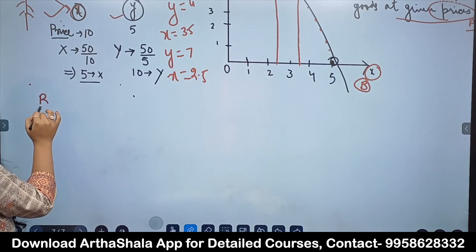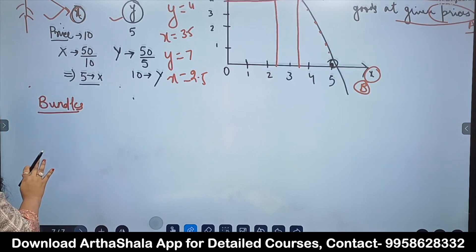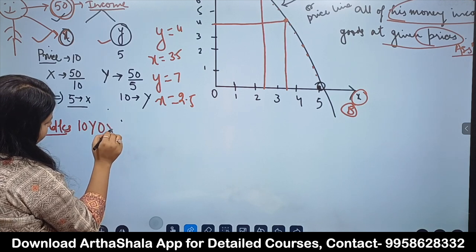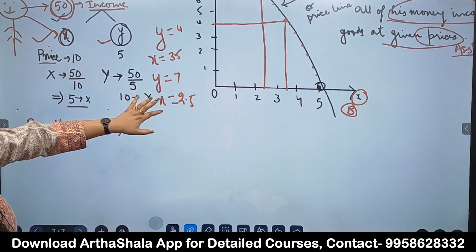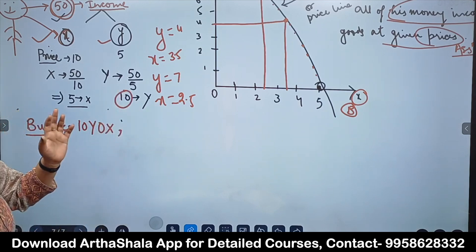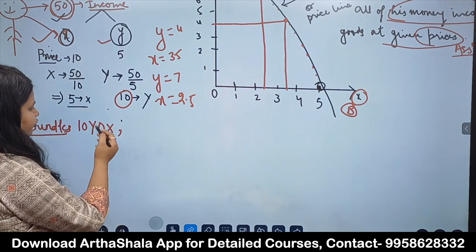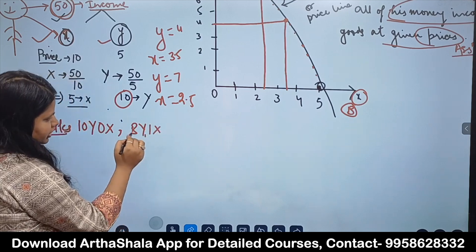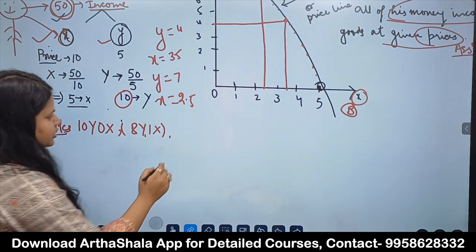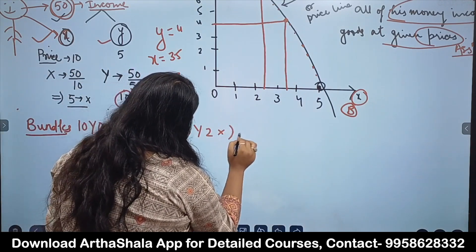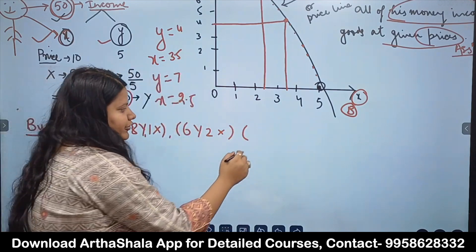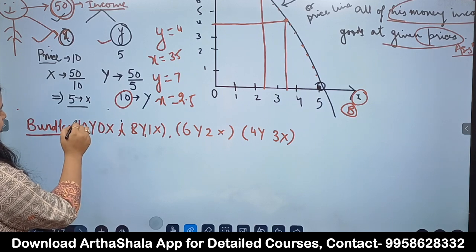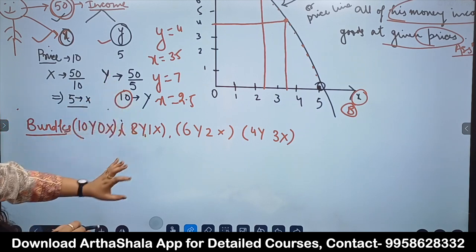Let us build different bundles. The first bundle: 10 units of Y and 0 units of X — all money spent on Y. Then reduce Y by 2 and increase X by 1: so (8Y, 1X). Next combination: (6Y, 2X). Another combination: (4Y, 3X). For clarity, let us verify satisfaction remains the same by putting in values — X price is 10, Y price is 5.